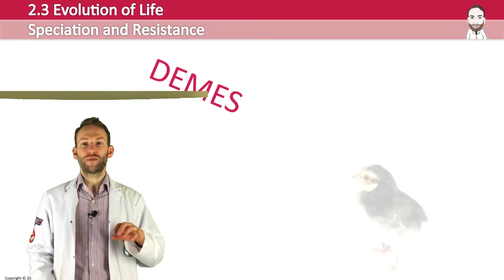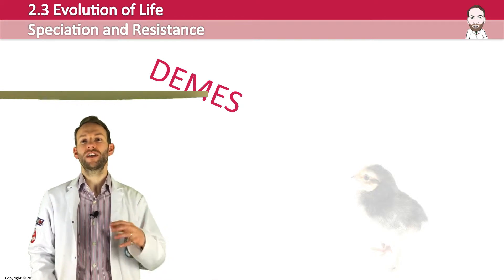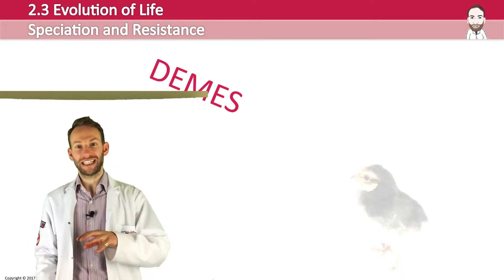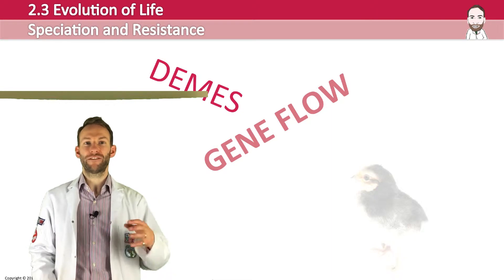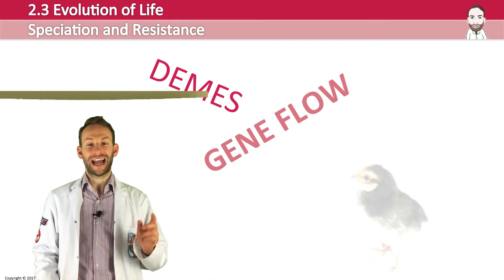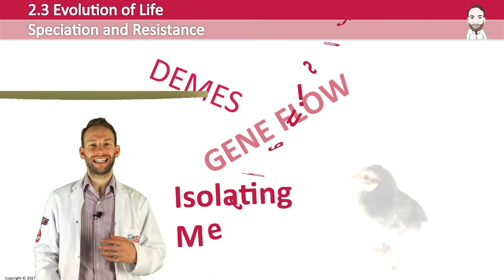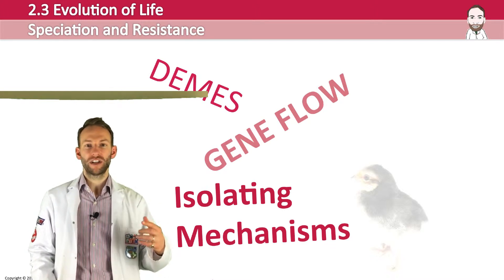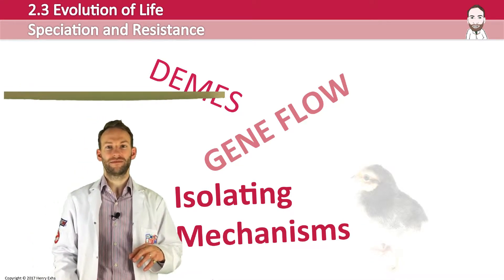Individuals within a deme tend to breed with each other because they're in a population together. Speciation starts to occur when a deme becomes separated and the flow of genes between demes stops. Without gene flow they become isolated and will start to change differently if the selection pressures are slightly different. Any barrier that prevents long-term gene flow between demes is known as an isolating mechanism. Eventually the new group accumulates so many differences that interbreeding could no longer occur.